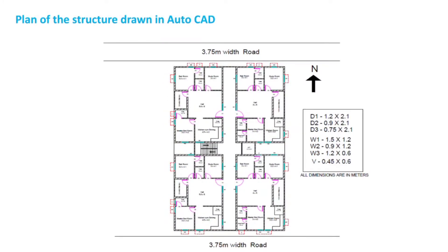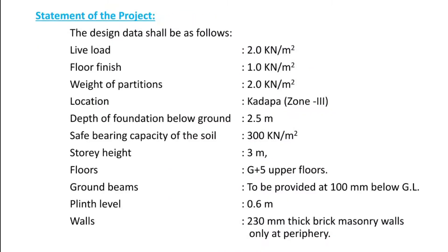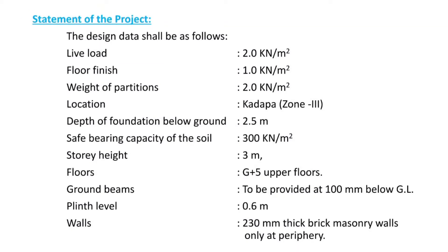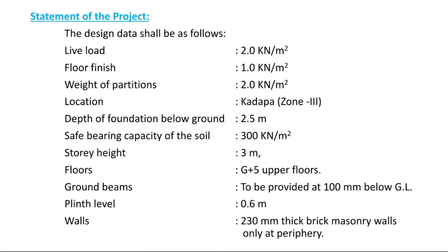We plan the building as per the building bylaws. For our project, we take the live load as 2 kN per meter square, floor finishes as 1 kN per meter square, and weight of partitions 2 kN per meter square. The location of our project is Kadapa and depth of foundation below ground level is 2.5 meters and the SBC is 300 kN per meter square. Each story height is 3 meters and plinth level is 0.6 meters. The periphery wall thickness is 230 mm and the partition wall thickness is 120 mm.